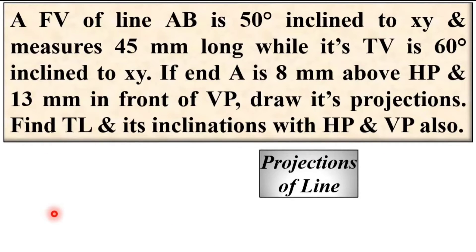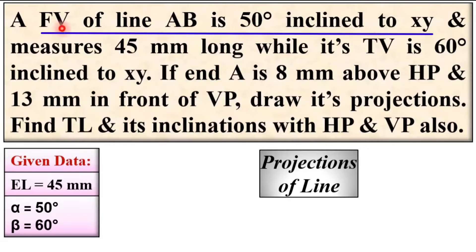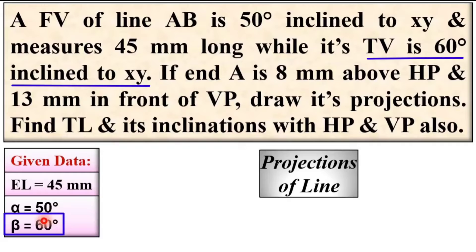First of all, write down the given data in symbolic notation. The front view length, indicated by eL, is given as 45 mm. The front view of line AB is 50 degrees inclined to XY — this angle is indicated by alpha. Alpha is the apparent angle and is always the angle of the front view. The inclination of the top view is always indicated by beta, so here alpha and beta are both apparent angles.